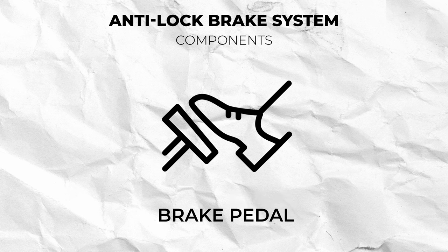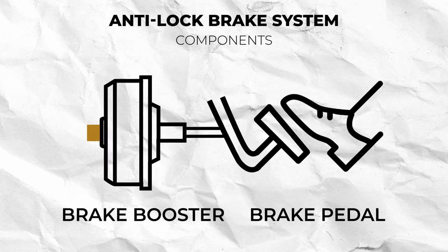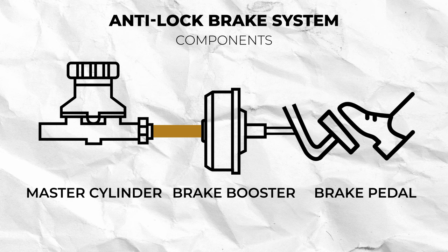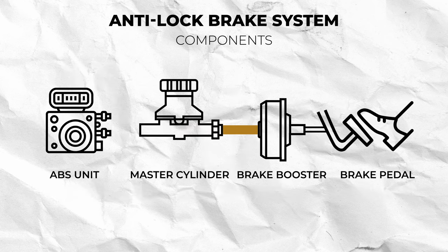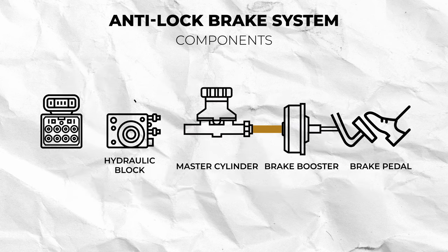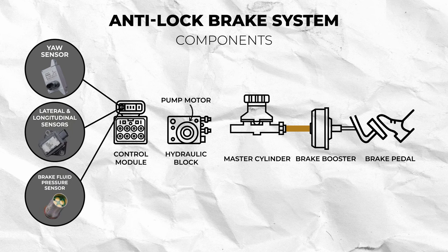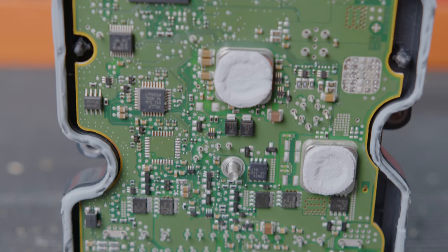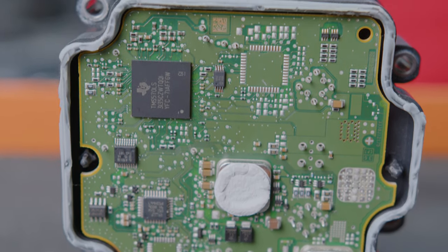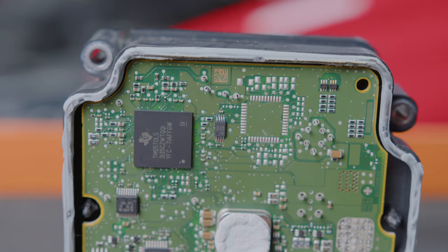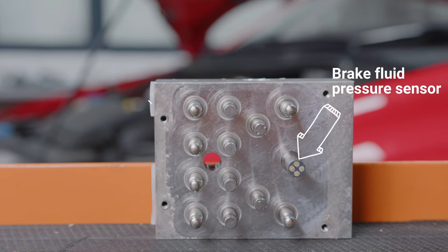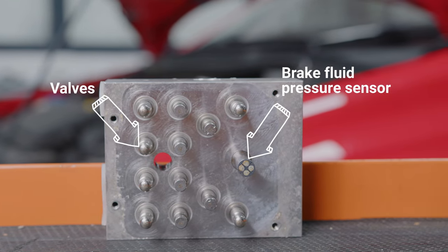First you have the brake pedal, which in older vehicles may be attached to a brake booster that leads on to the brake master cylinder. Next is the ABS unit, which consists of the hydraulic block, pump motor, and control unit. In modern vehicles this unit can also contain the yaw sensor, lateral and longitudinal sensors, and the brake fluid pressure sensor. These sensors are controlled by the ABS control unit, with the yaw, lateral, and longitudinal sensors being internal to the unit and the brake fluid pressure sensor being internal to the ABS hydraulic unit.